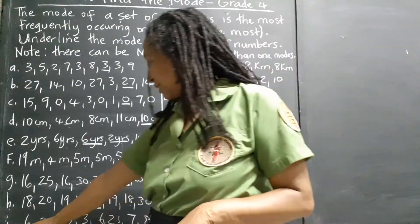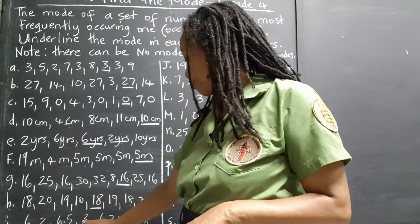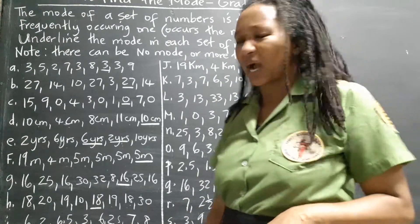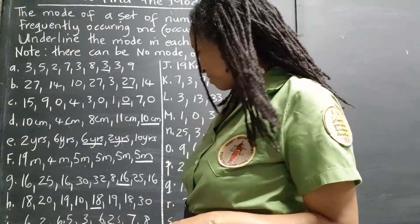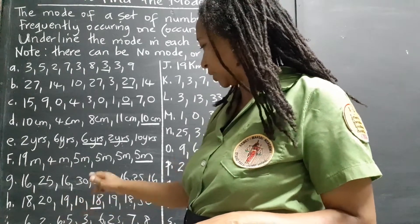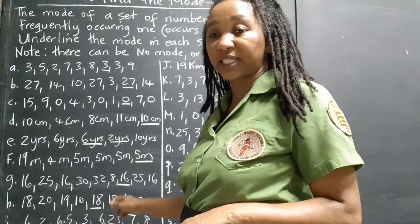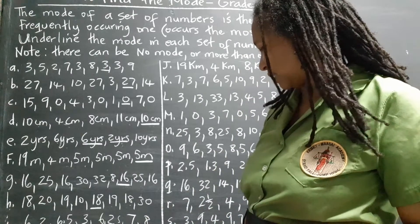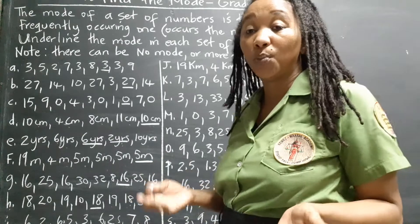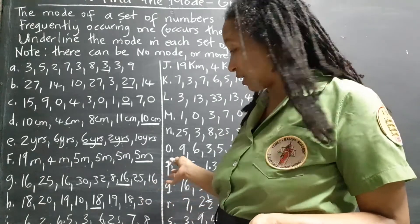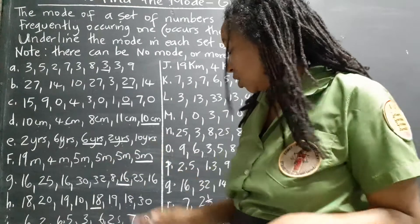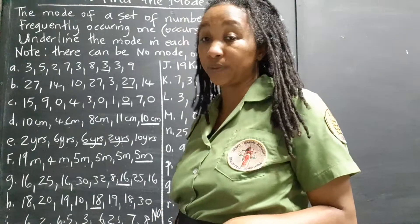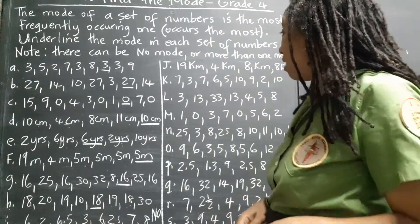Set I: 6, 2, 6.5, 3, 6.25, 7, 8. Is any number repeating? Let's check: 6, 2, 6.5, 3, 6.25, 7, 8 — nobody is repeating. So there is no mode for this set. Let's double-check to be sure before calling it — yes, there is no mode. We write 'none' for set I.